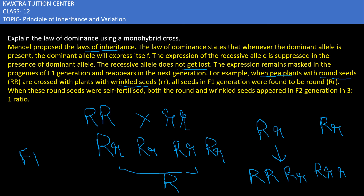In the F2 generation, the wrinkled seeds emerged again. The recessive gene was not lost; it emerged again and showed its expression when present in the homozygous state. This is the law of dominance. Thank you.